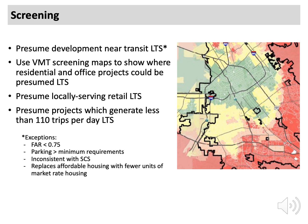Many projects don't even need a VMT analysis because they're in transportation-efficient locations or have other characteristics that make them likely to have low VMT. OPR suggests presuming the following project types to have less than significant impact on transportation, obviating the need for analysis. Residential, office, or retail development within a half mile of transit can be presumed less than significant, with a few exceptions listed below.